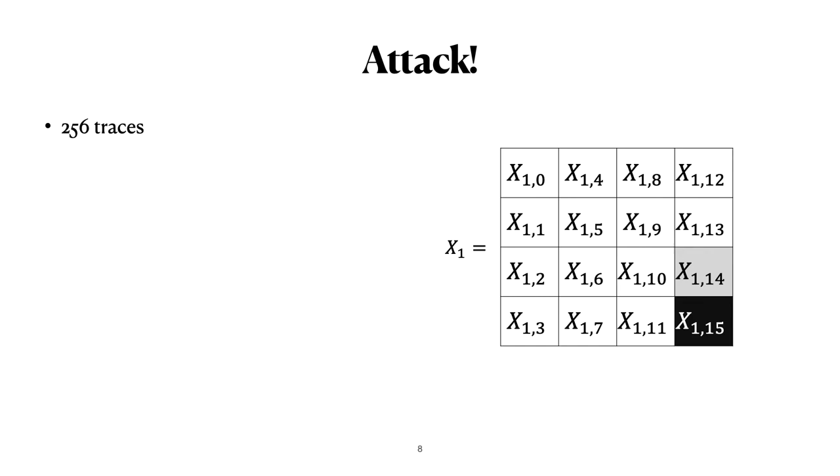When this byte reaches a value 255 the counter will overflow. It will go back to zero and a carry will activate the next byte, byte number 14. This happens only once in our set of 256 traces. And so we will use gray squares to indicate bytes like byte number 14 that change once. All the other bytes they are constant and we will indicate them with white squares.